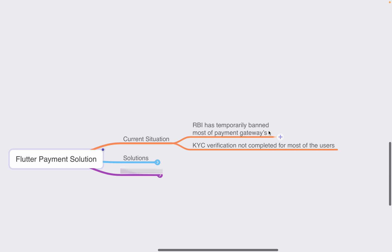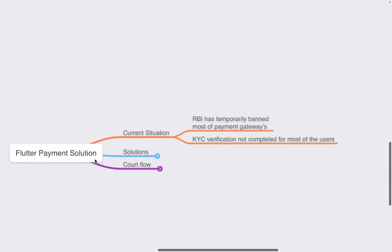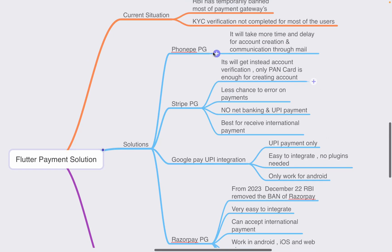The current situation is that the RBI has temporarily banned most payment gateways. The main problem is that KYC verification has not been completed for most users. They accept the KYC documents for account creation but make delays because of the RBI rules — they can't complete the process but don't say so directly. This is the current situation causing too many problems with payment solutions.